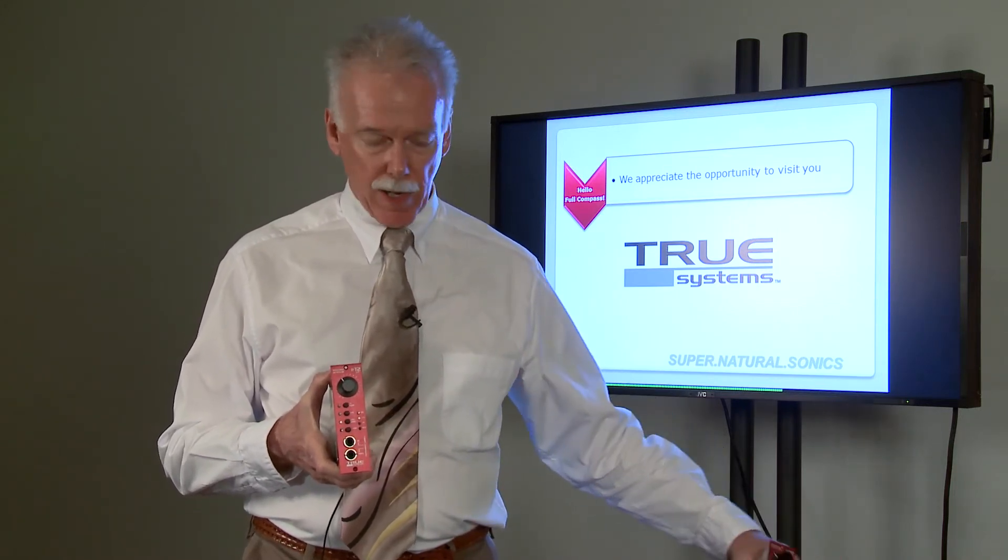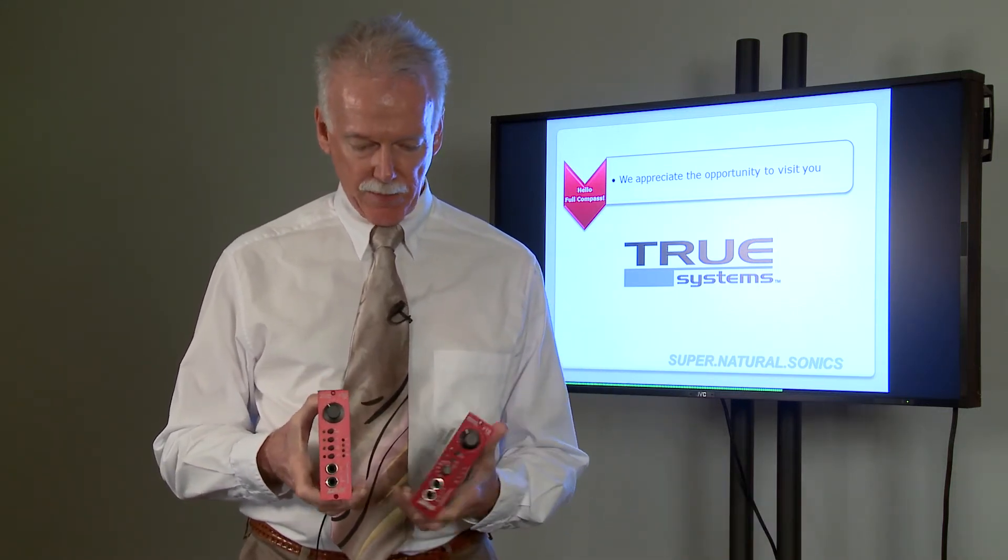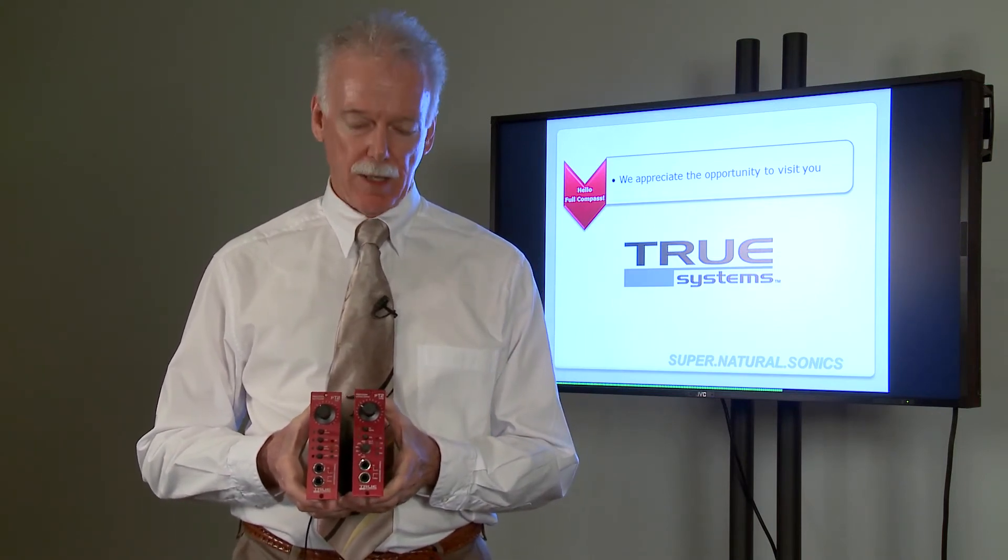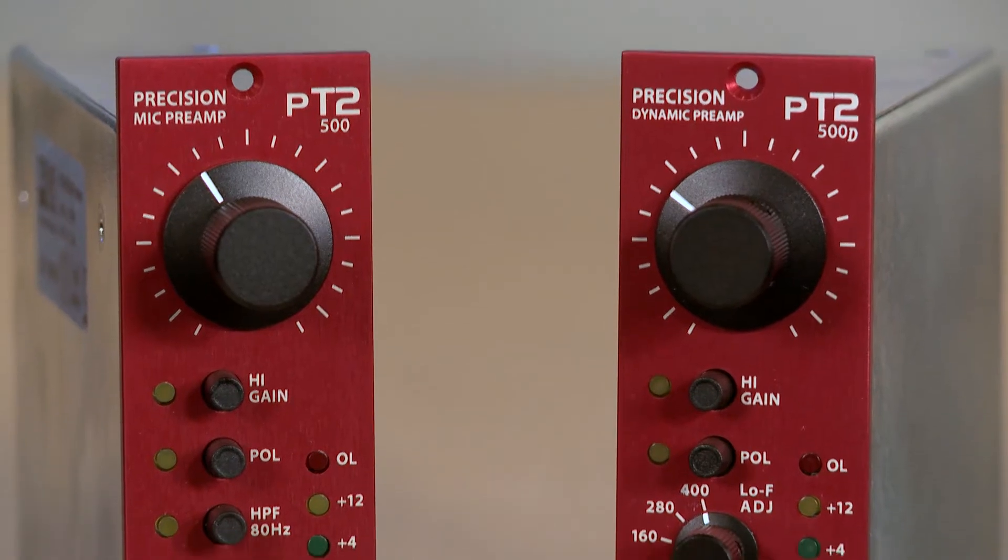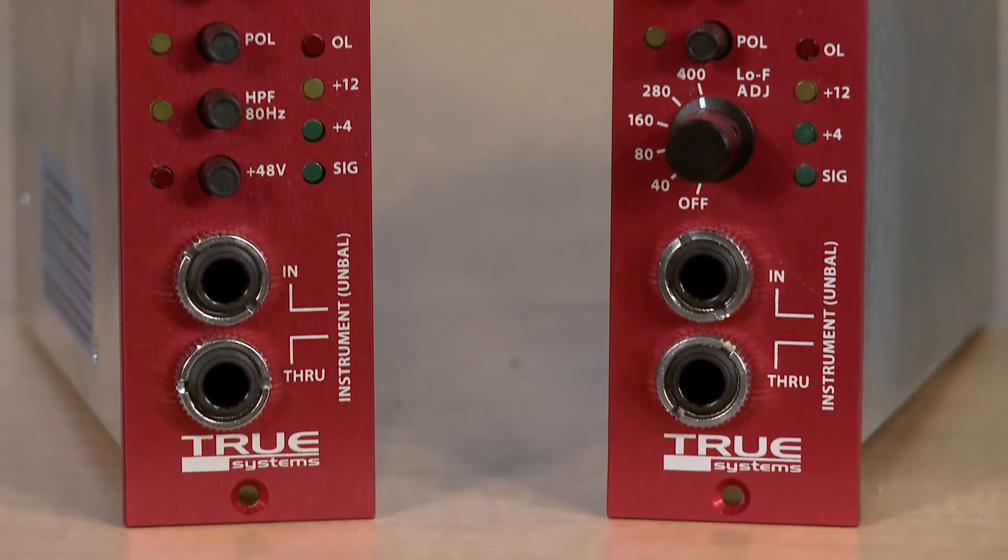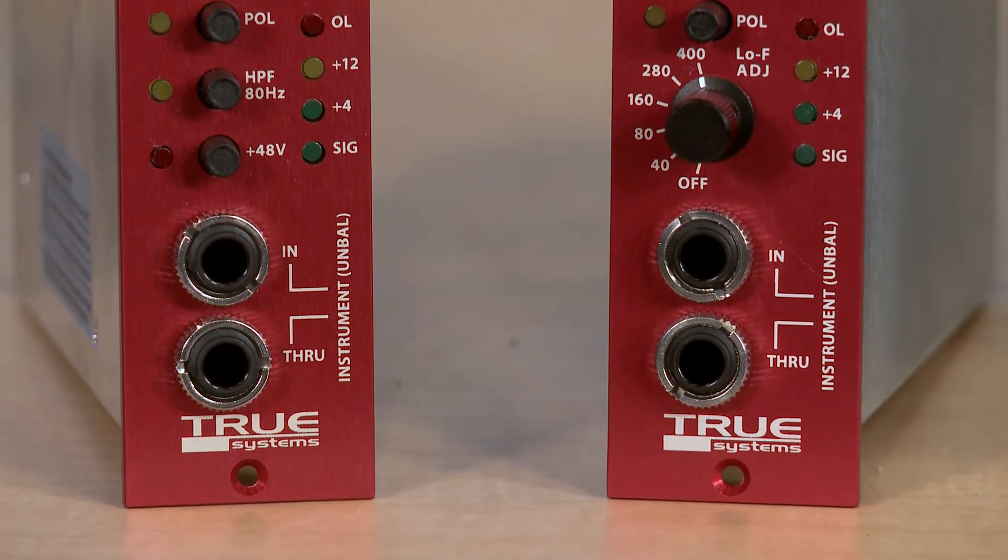We've just now added another product to this line. It's a variation. It's called the PT2500D, and it's kind of a super tweak for ribbon dynamic and other microphones that don't need phantom power. It has more gain, up to 76 dB.